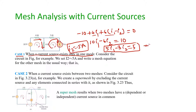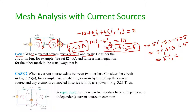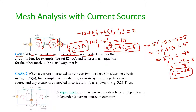Substituting I2 equals minus 5 into equation 1: 5 I1 minus 3 times (minus 5) equals 5, giving 5 I1 plus 15 equals 5, so 5 I1 equals minus 10, and I1 equals minus 2 amps. So I1 equals minus 2 amps and I2 equals minus 5 amps.